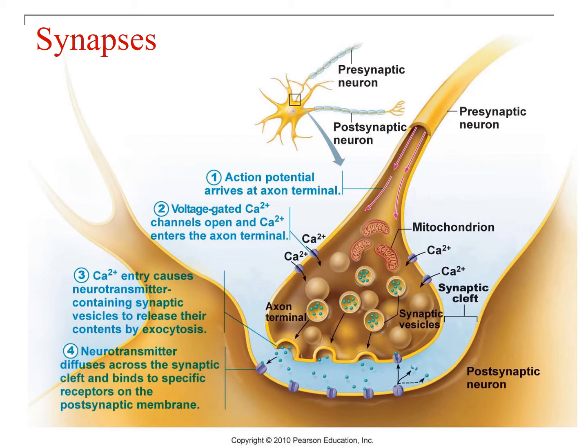Once you get to the end of the axon, what happens? Now we'll talk about synapses — this will be very similar to what happened at the neuromuscular junction from test three. The space is the synaptic cleft. Each round container is a synaptic vesicle — bubbles of membrane that contain neurotransmitters shown as green dots. First, the action potential arrives at the axon terminal.